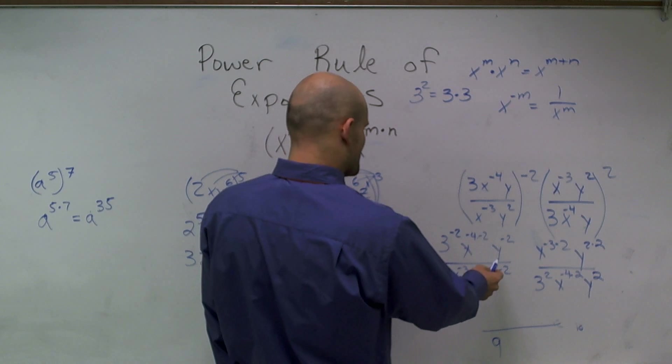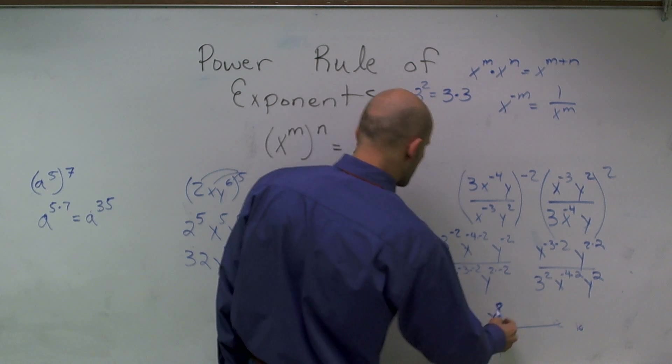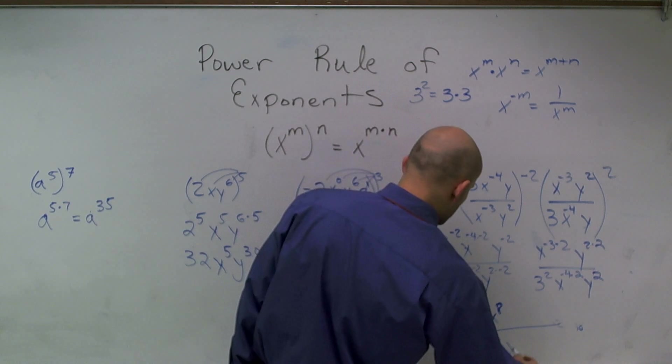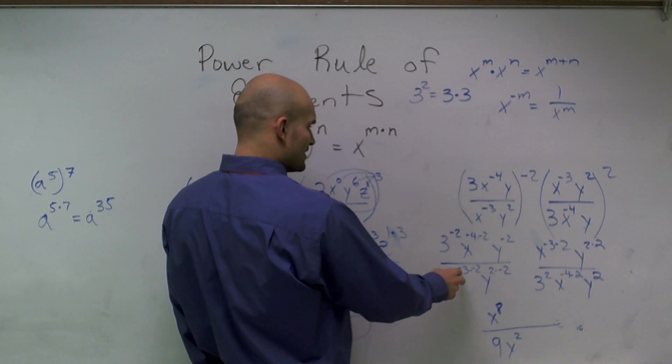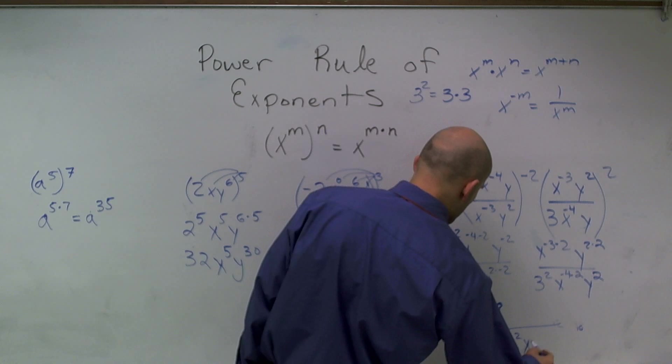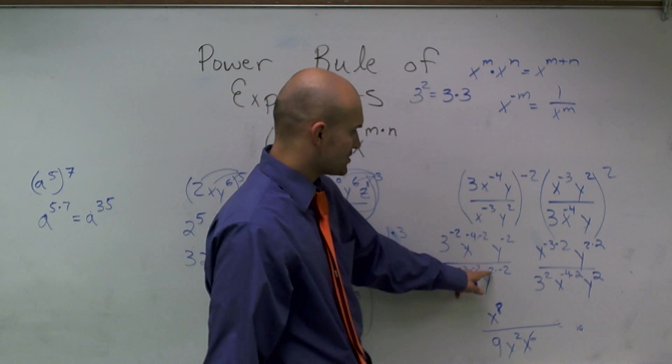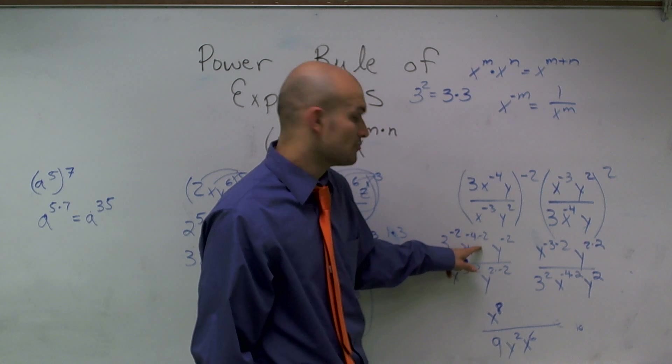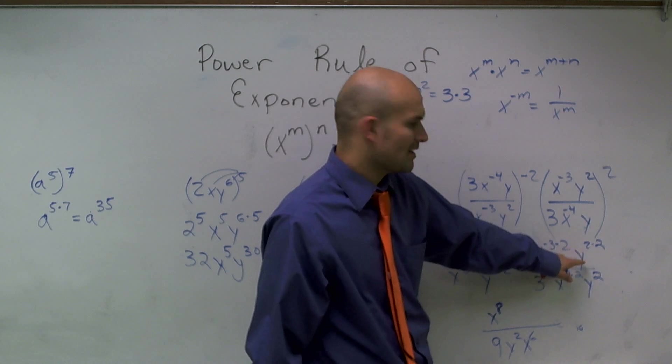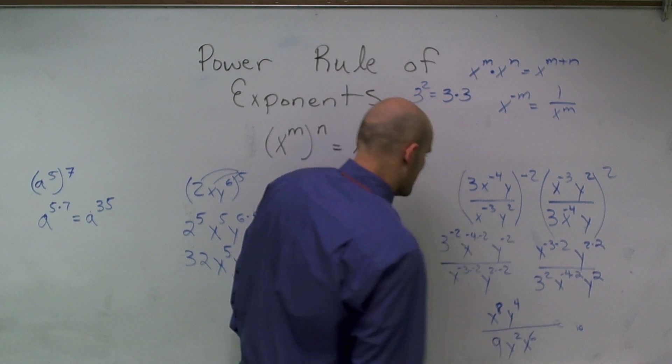x to the negative 4th times negative 2 is going to be a positive x, so I have x to the 8th, and then I'll have y squared down here because that's a negative. Up here, I have x to the 3 times negative 2, which is x to the 6th, and then y to the 2 times negative 4, which is y to the 2 to the negative 4, so that means my y has to come up to my numerator. Or if you look over at this example, I show that it's y to the 4th in my numerator.